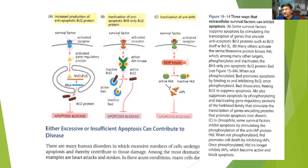This is all about apoptosis. The extrinsic process requires external factors such as Fas ligand or TNF-alpha and TNF-beta, which lead a cell to death. This process operates at many places during development, during the growth process, and even during immune reactions.